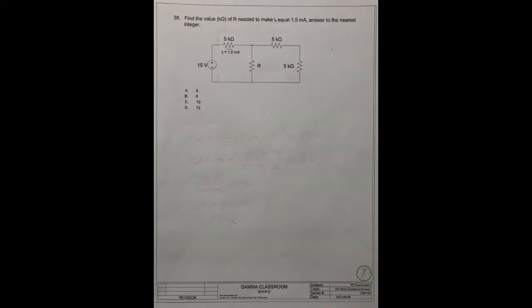Question number 36. Find the value in kilo-ohms of R needed to make I1 equal 1.5 mA, answer to the nearest integer.